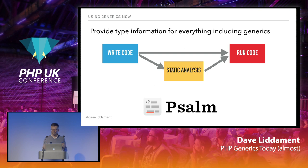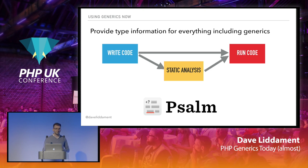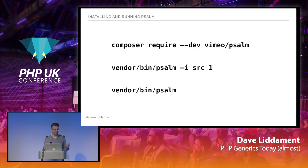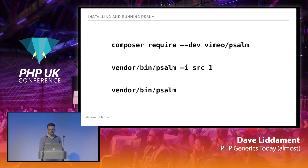If we want our static analysis to give us correct results, we have to provide type information for everything, including generics. We can use Psalm, PHPStan, or Phan for this — Psalm is probably the most advanced of the tools when it comes to type checking as of today, but these tools are constantly evolving. Installing Psalm is pretty easy — all the tools are similar, you just do a composer require. You initialize it with a -i flag, tell it where your code is, and give it a strictness level between 1 and 8 — level 1 being the strictest.